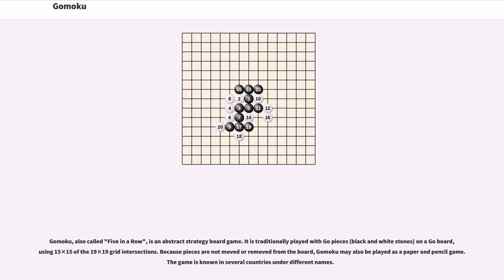Gomoku, also called Five in a Row, is an abstract strategy board game. It is traditionally played with Go pieces, black and white stones, on a Go board, using 15x15 of the 19x19 grid intersections. Because pieces are not moved or removed from the board, Gomoku may also be played as a paper and pencil game. The game is known in several countries under different names.